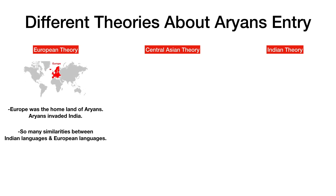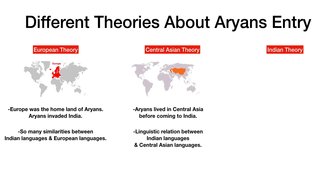The European theory says that the Aryans came from Europe, which was their actual home. If we compare the languages of Europe and the Indian language Sanskrit, there are many similarities in words and their pronunciations. The Central Asian theory says that Aryans originally lived in Central Asia, from where they moved and invaded India. Archaeologists are convinced with this theory because there are linguistic similarities between Central Asian languages and Indian languages.